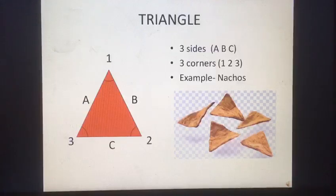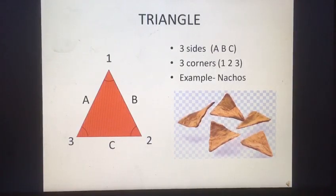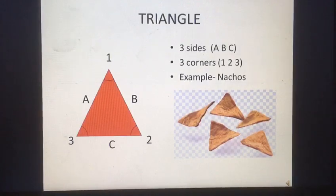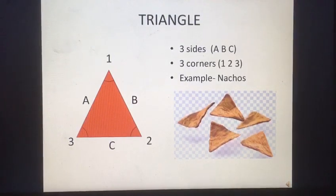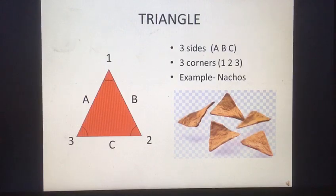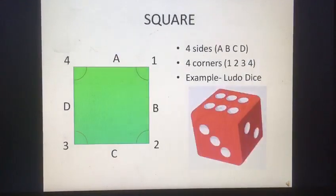Triangle. It has three sides — A, B, C — and three corners: one, two, three. Example: nachos.